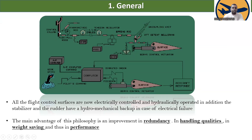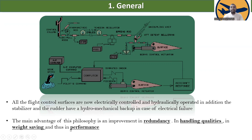This is the normal control column and this is the side stick. All flight control surfaces are now electrically controlled and hydraulically operated. Before, it was manually controlled. In addition, the stabilizer and rudder have a hydromechanical backup in case of electrical failure. The main advantage of this philosophy is an improvement of redundancy, handling qualities, weight saving, and thus performance.